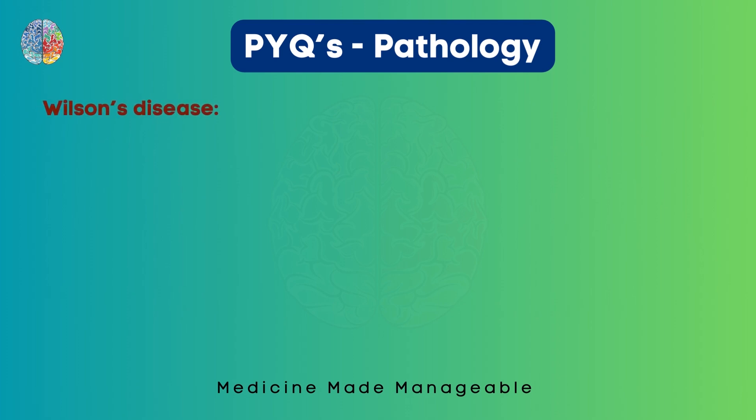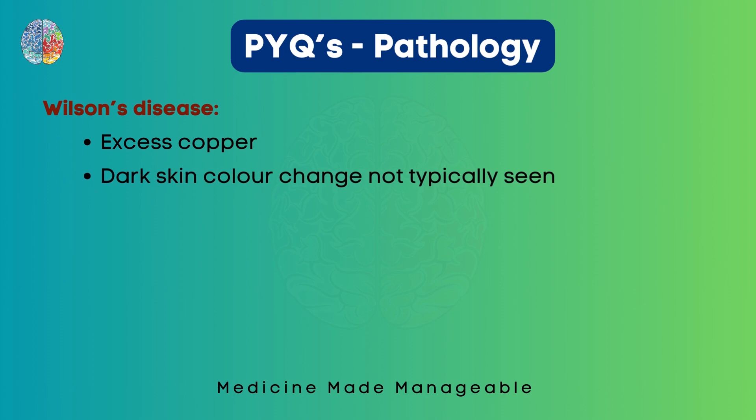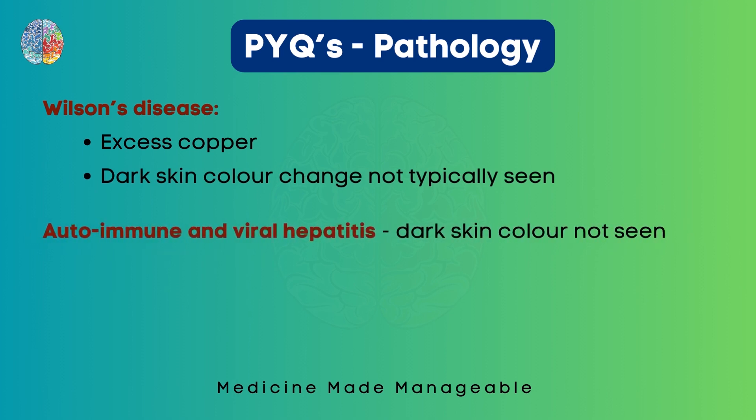In Wilson's disease, there is excess copper and dark skin color change is not typically seen. Similarly, in autoimmune and viral hepatitis, the dark skin color is not seen.